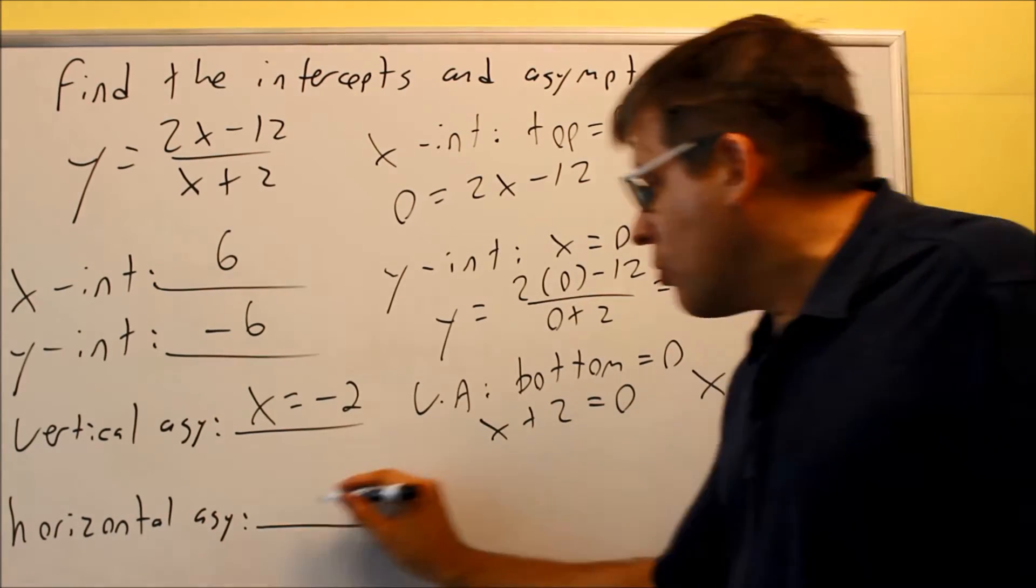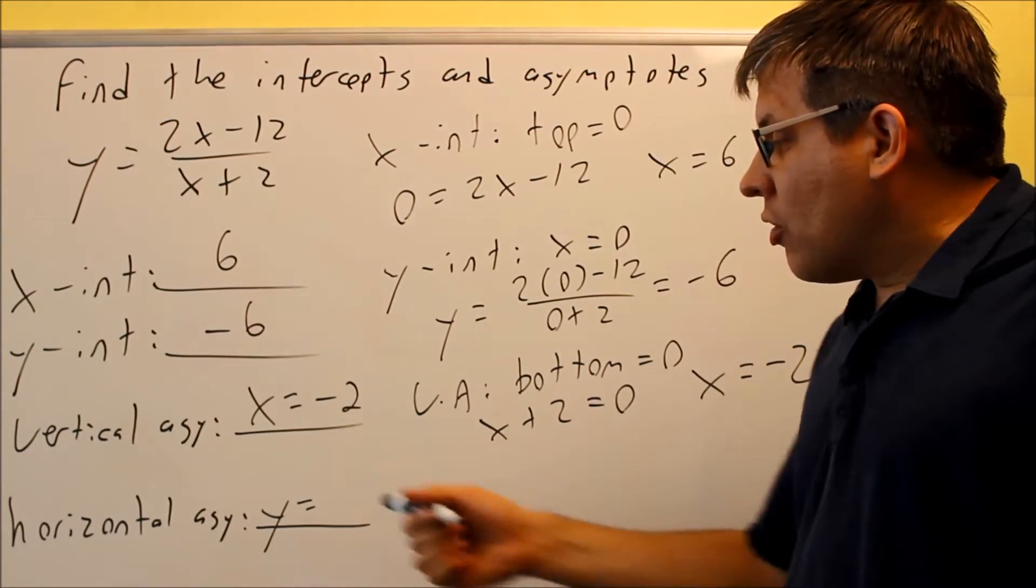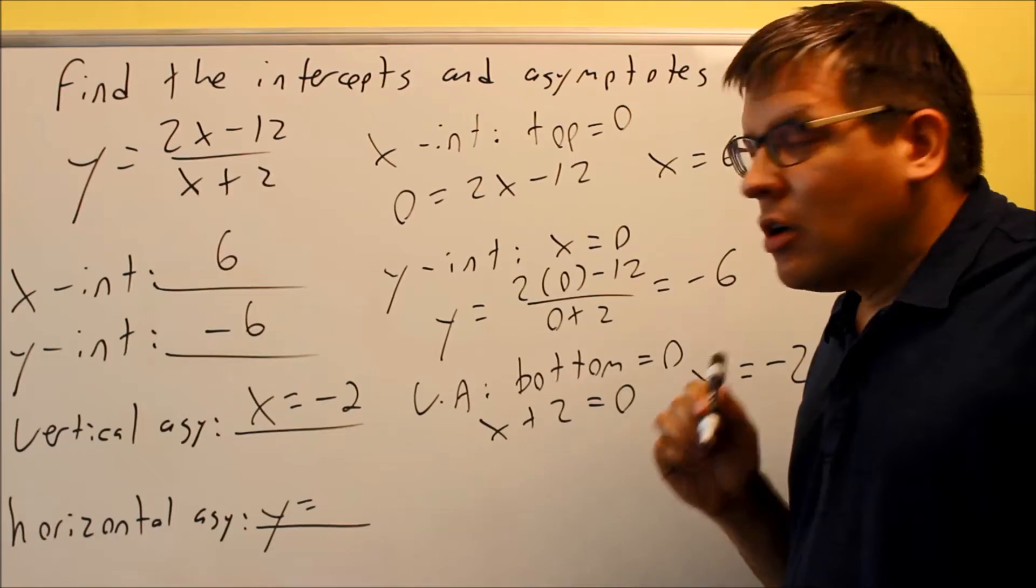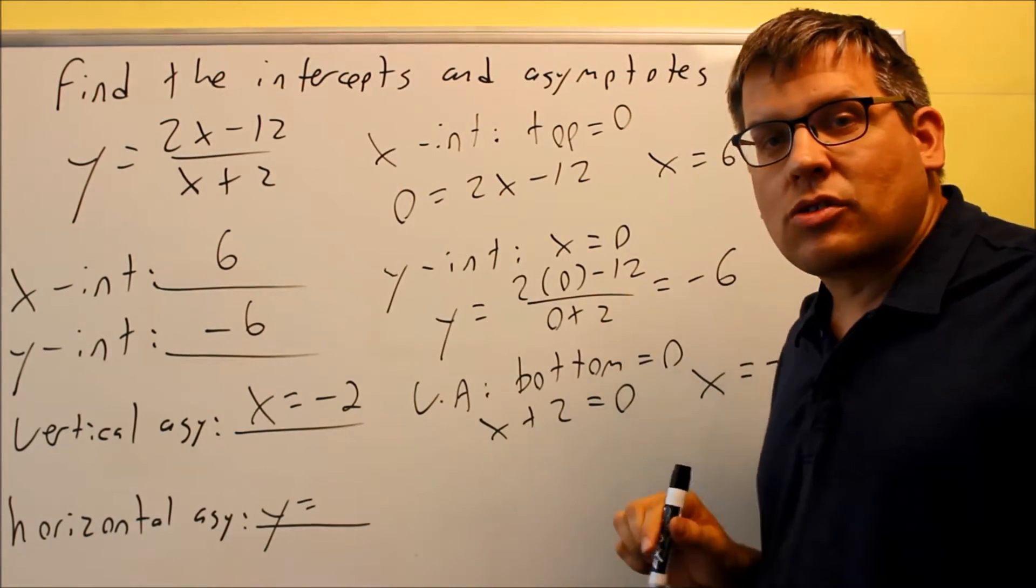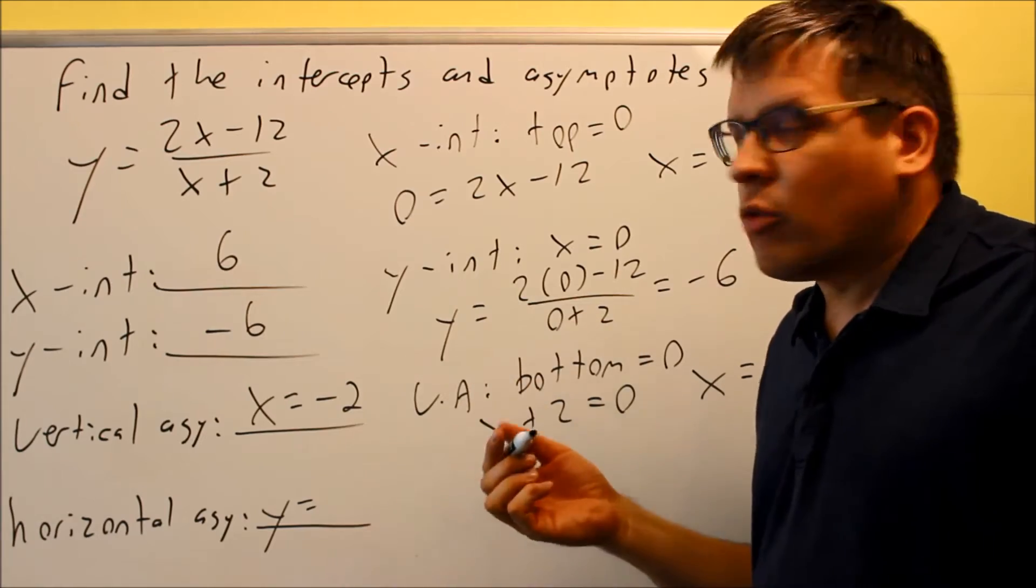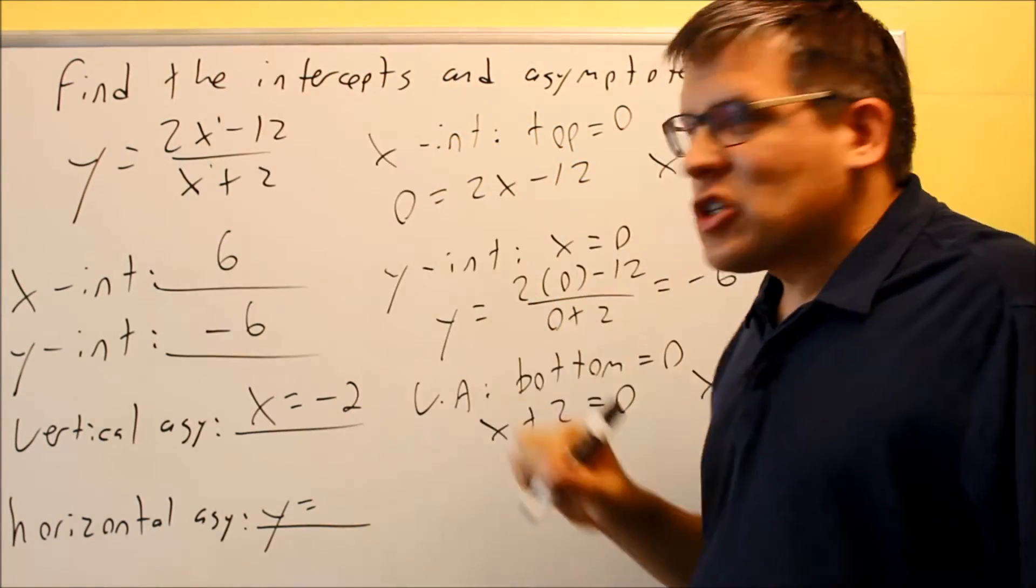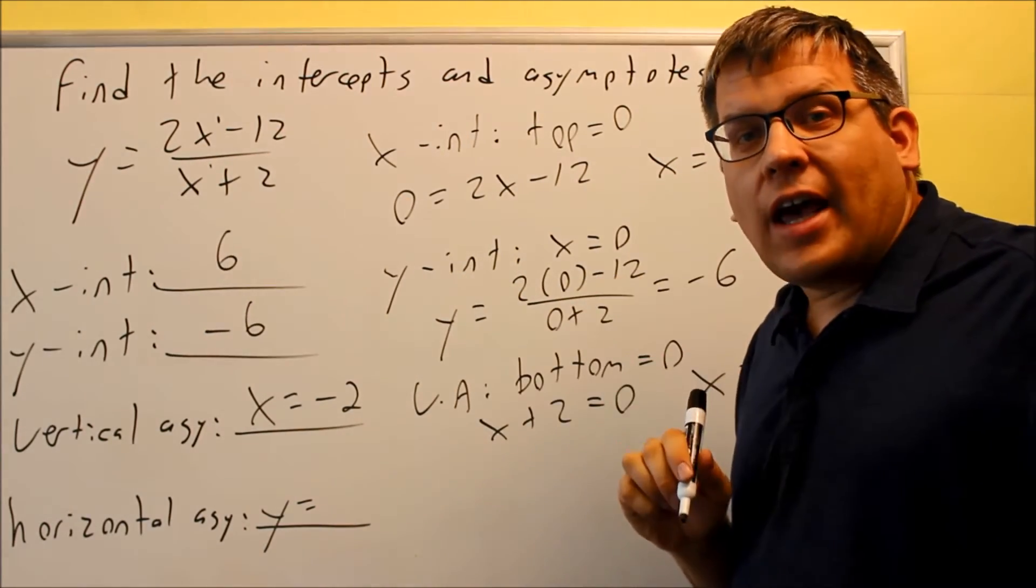Likewise for the horizontal asymptote, that's always going to start with y equals something. So for the horizontal asymptote, you want to go through and look at the notes. The notes talk about three different rules, and it talks about how you would find the horizontal asymptote based on those rules. Basically the way it works is you want to look at the highest power on the top and the highest power on the bottom. The highest power on top, that's called n.